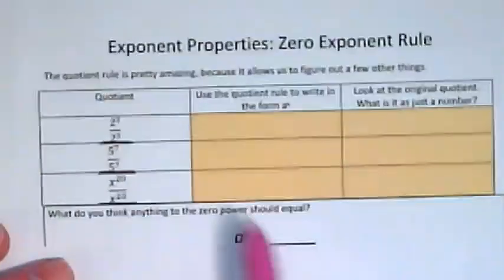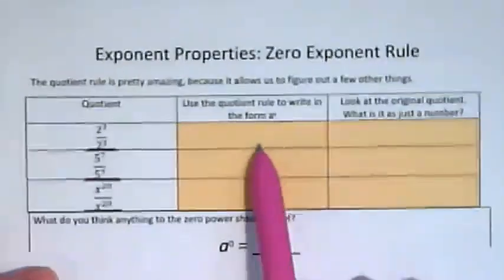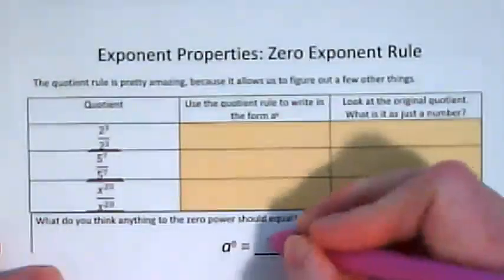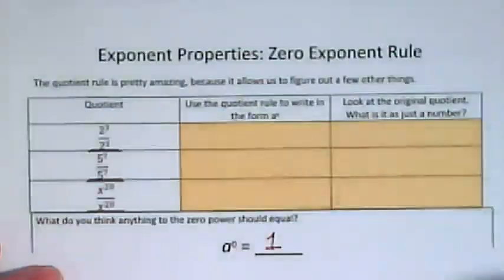On the same piece of paper is the zero exponent rule. Anything to the zero power is equal to 1. What's the reason for that?